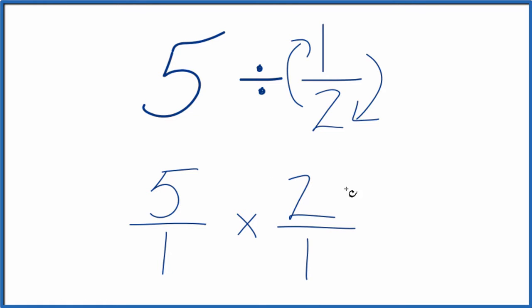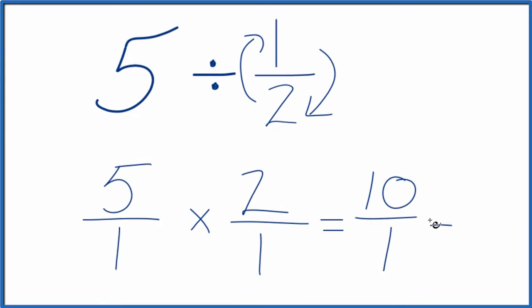So now we can just multiply the numerator, then the denominator will have our fraction. 5 times 2 is 10, and 1 times 1 is 1, and 10 over 1, that's just 10.